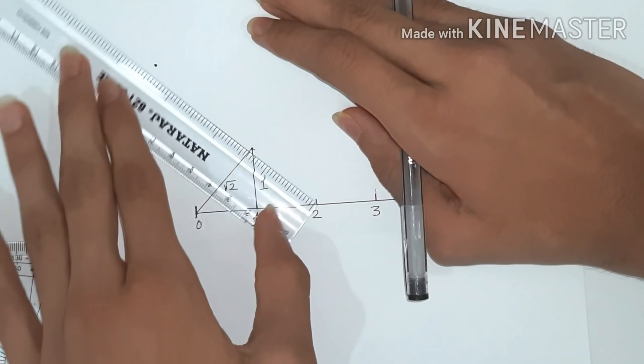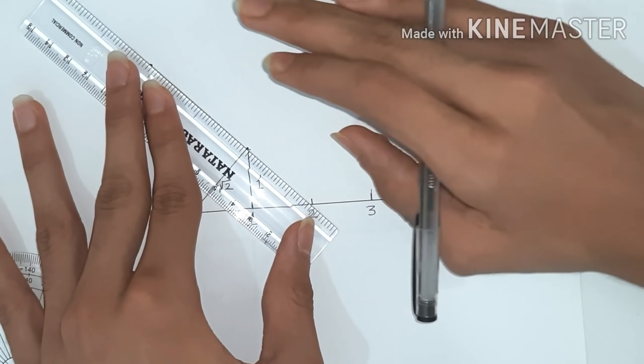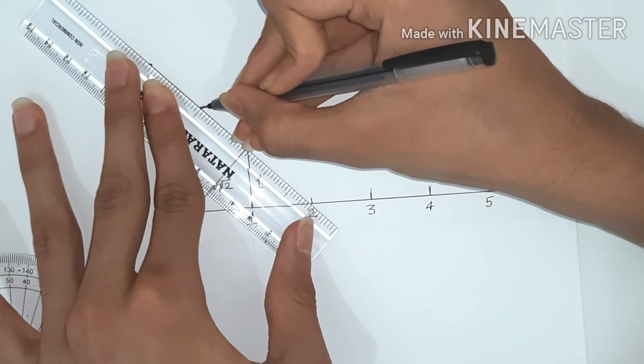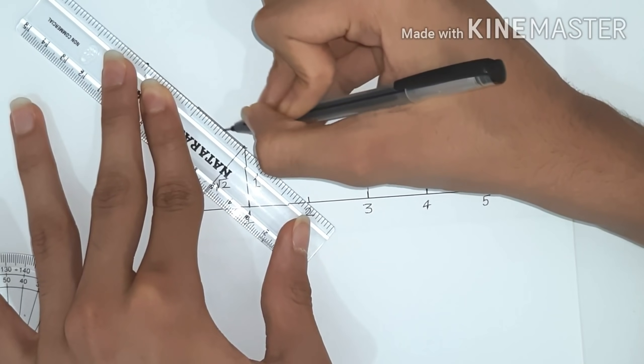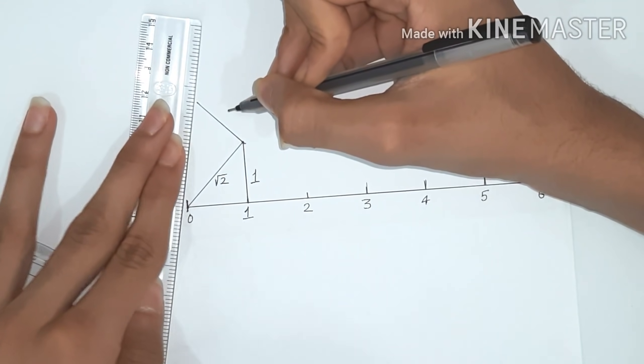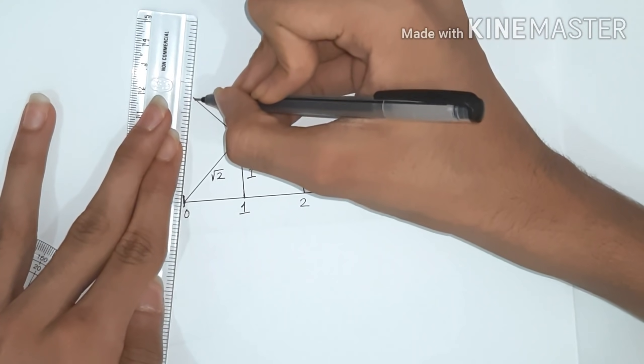The reason for one inch is we have taken one unit equals to one inch. That's why we'll take only one inch. After that, we'll join that line with 0 to get square root 3.